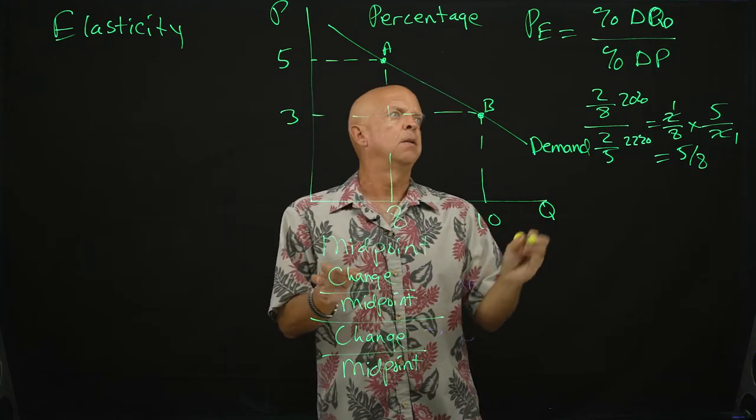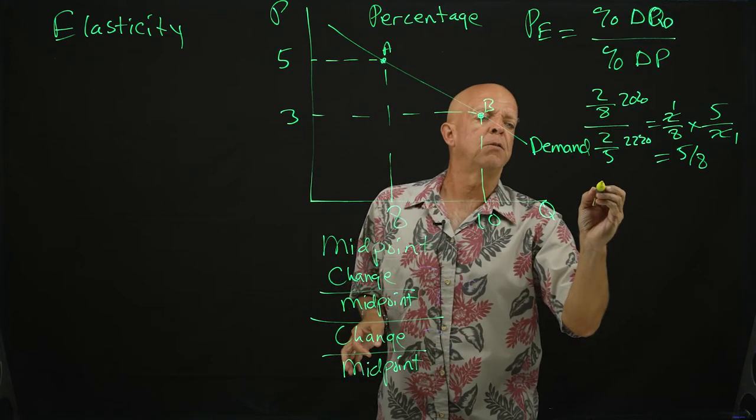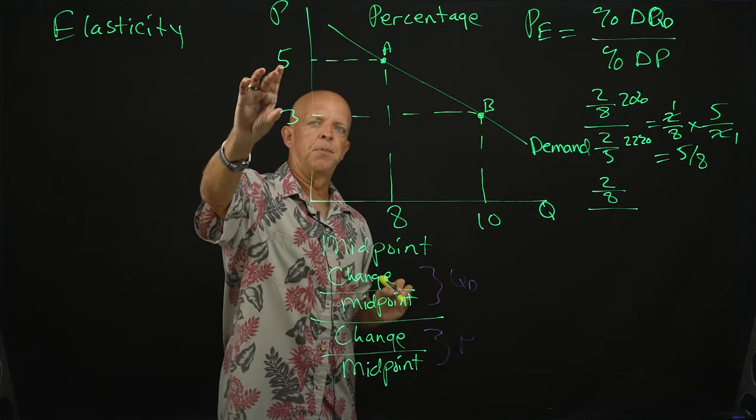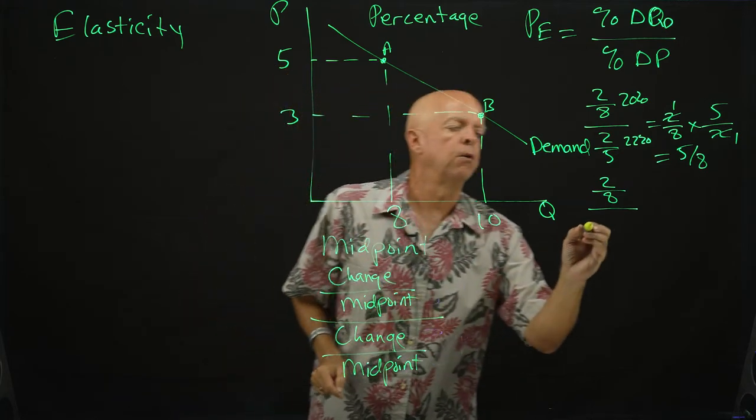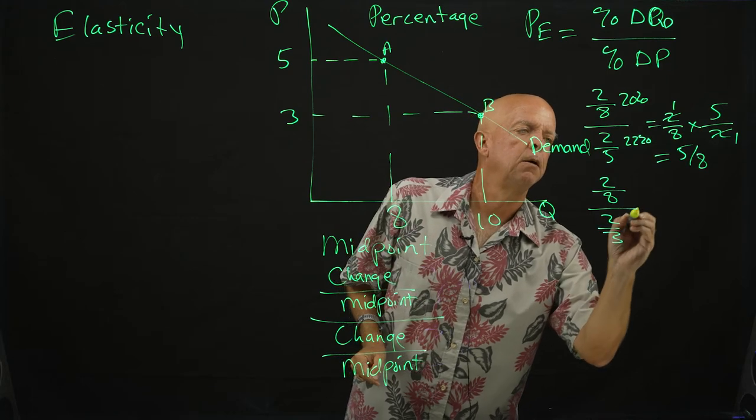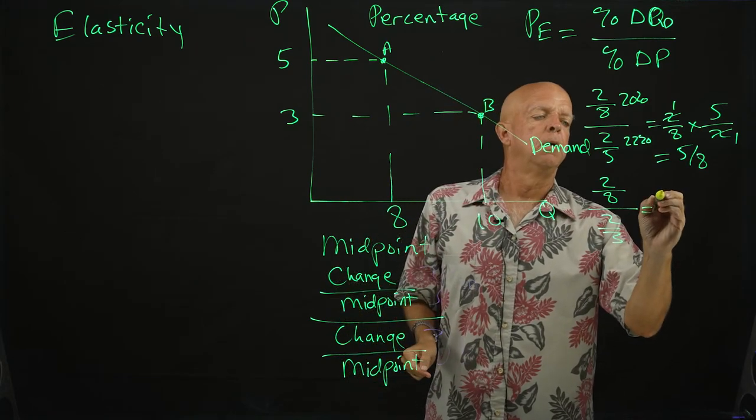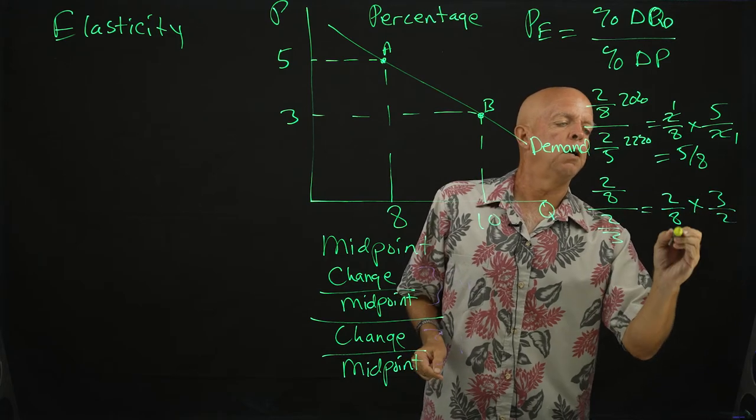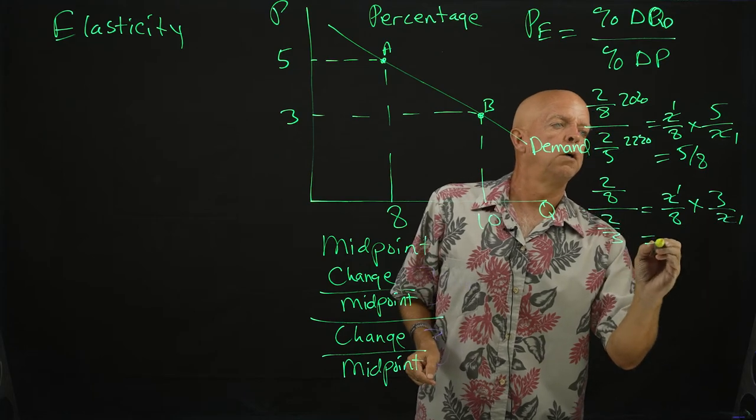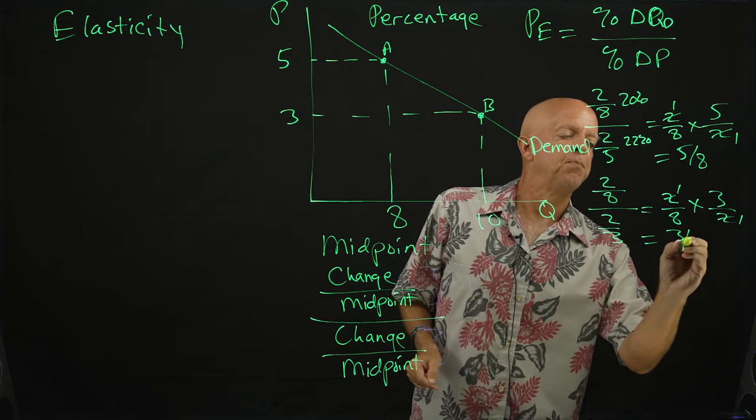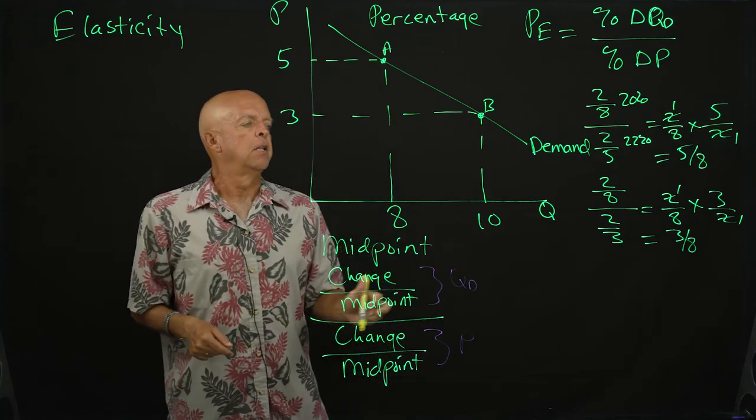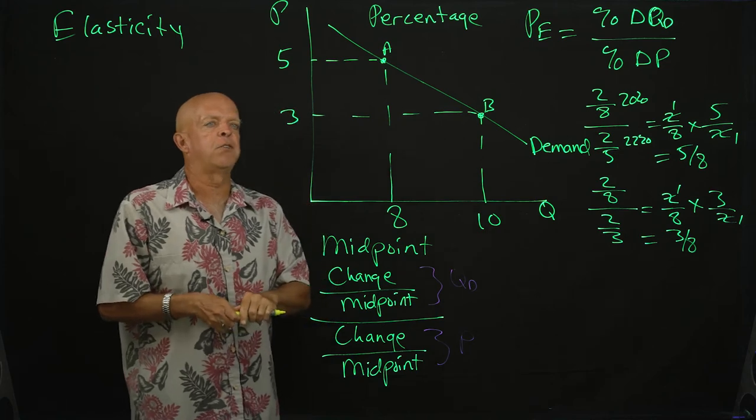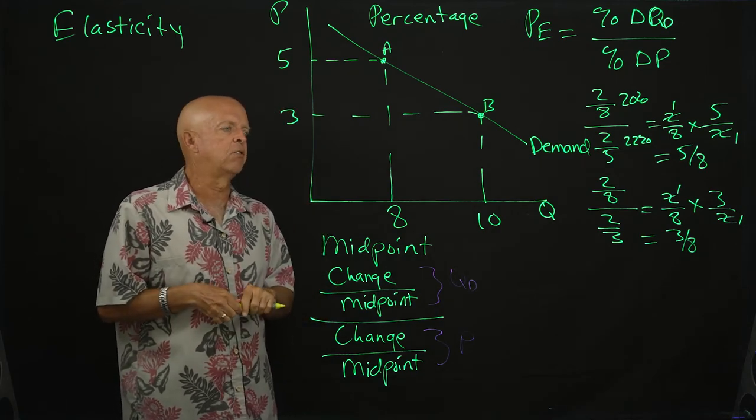So if we do that, percentage change in quantity demanded is going to be the same two over eight, but now we have change over the base, two over three. And this is going to be two eighths times three halves. Cancel, cancel, now we've got three eighths. The numbers are different - five eighths.